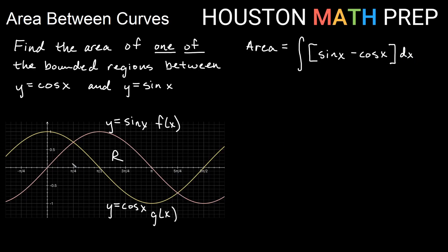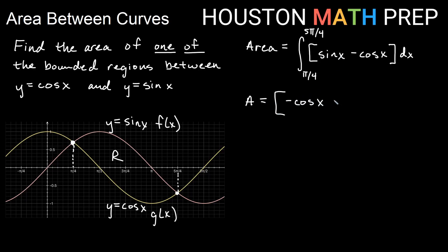We find the bounds by looking at the axis — the left intersection is at pi over 4 and the right is at 5 pi over 4. If unsure, set sine x equal to cosine x to find the intersection points. Now computing the antiderivatives: the antiderivative of sine x is negative cosine x, and the antiderivative of cosine x is sine x. So the antiderivative of (sine x minus cosine x) is negative cosine x minus sine x, evaluated from pi over 4 to 5 pi over 4.